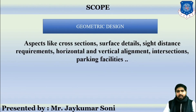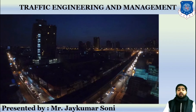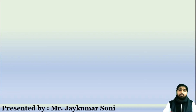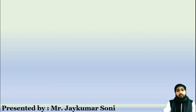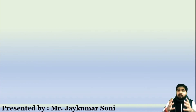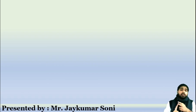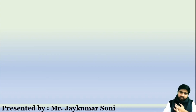Geometric design aspects include cross-sectional roads, surface details, sight distances, alignment, intersections, and parking facilities. The last parameter, A, stands for Administration and Finance, which deals with the provision of funds for carrying out these operations. In summary, this session covered the definitions of traffic engineering and traffic management, the scope of traffic engineering via the CSGOPA framework — Characteristics, Studies, Geometric Design, Operational Control, Planning and Analysis, and Administration and Finance. Thank you.